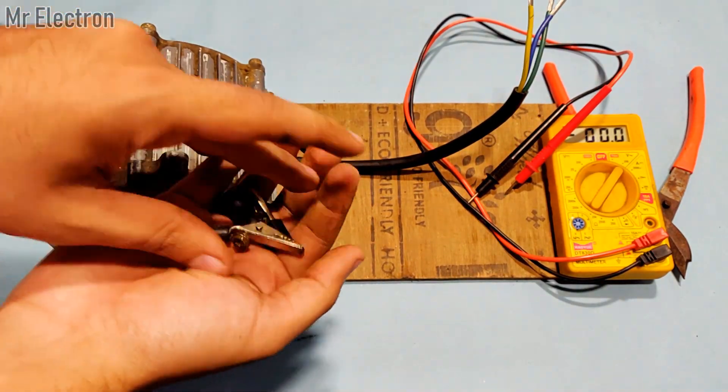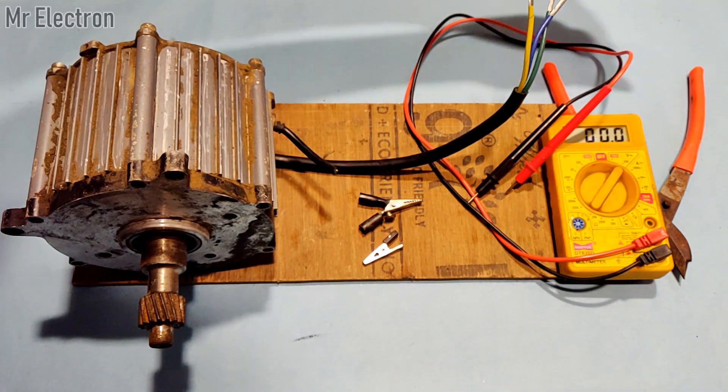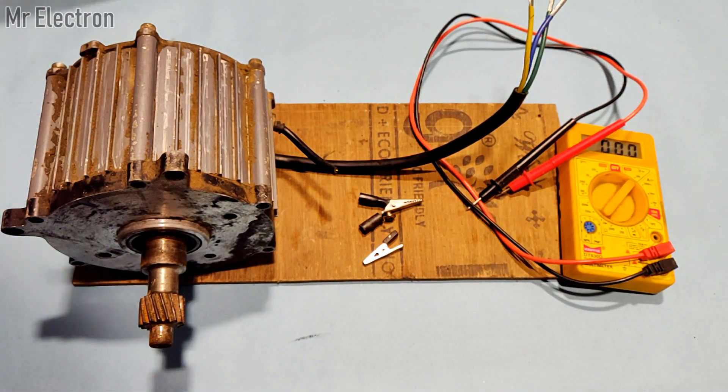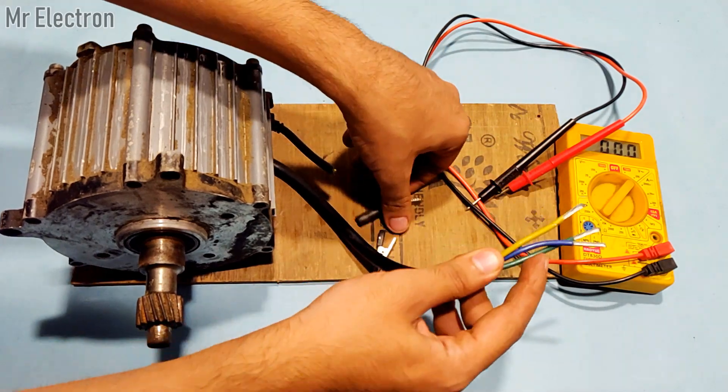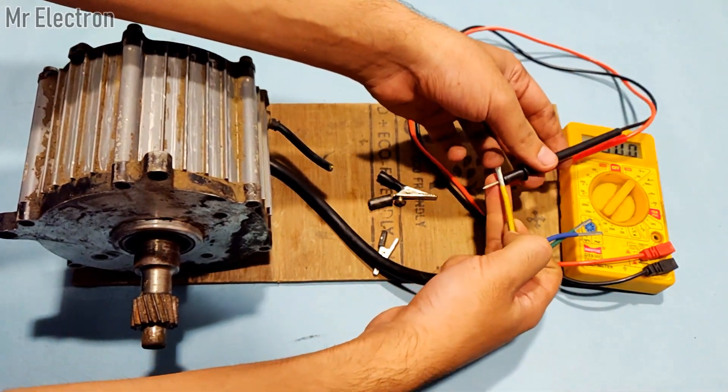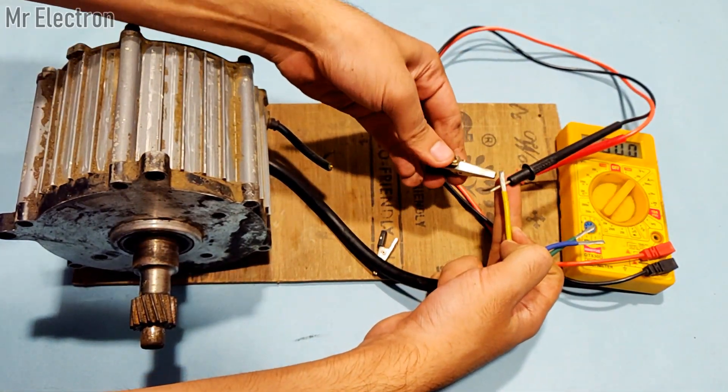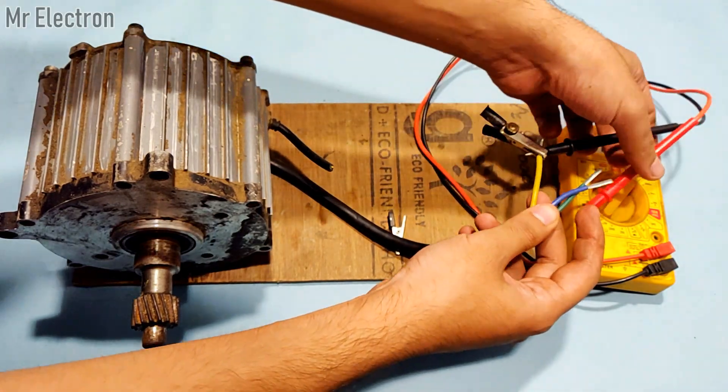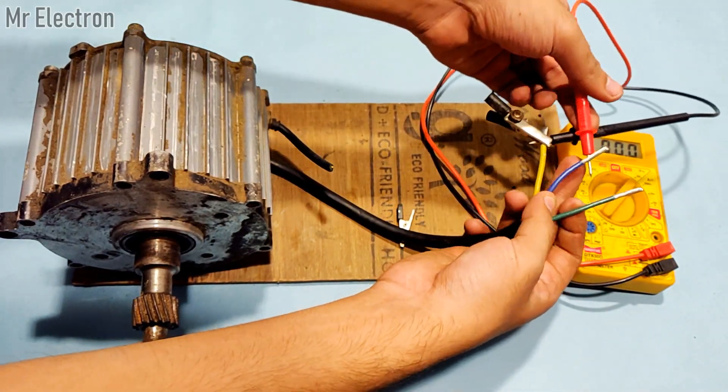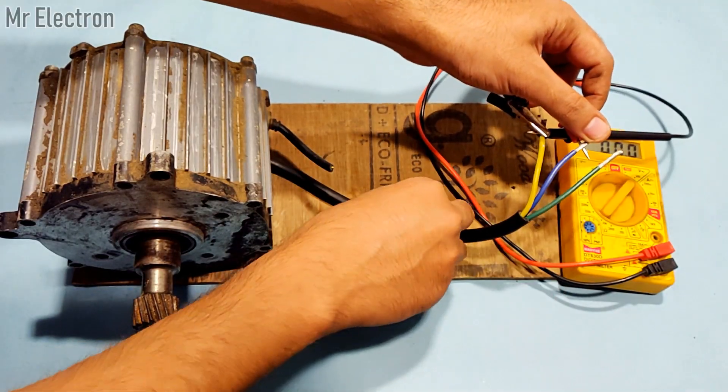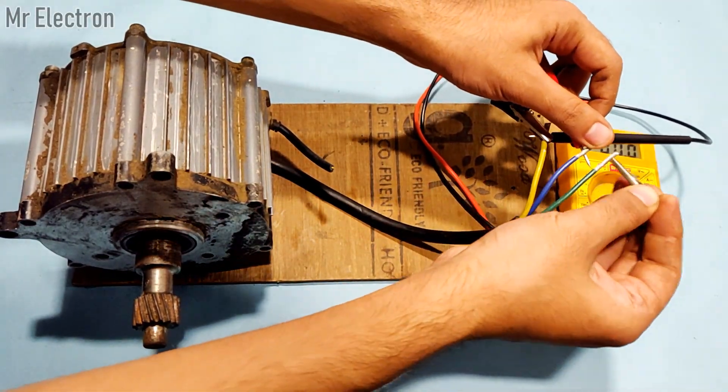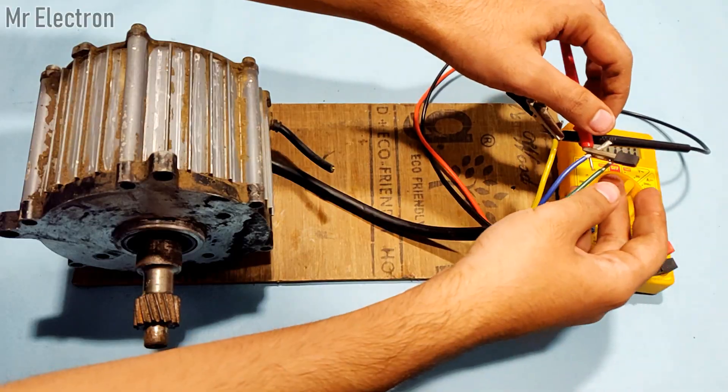I'm going to use a multimeter to measure the voltage across any two terminals of this BLDC motor. Since all three terminals will produce same voltage because of equal number of turns for the armature winding.